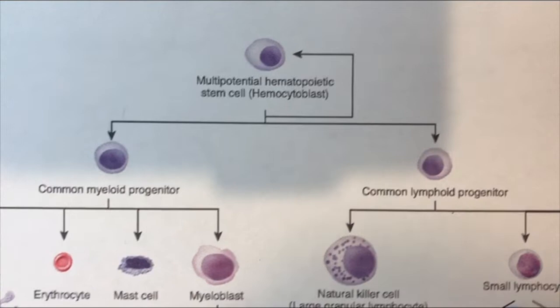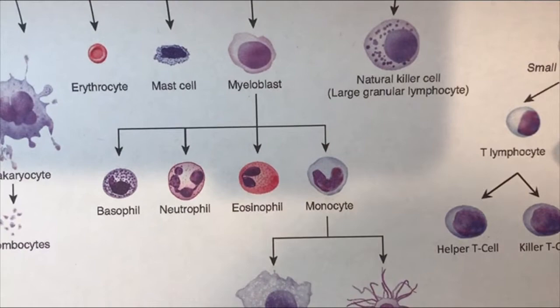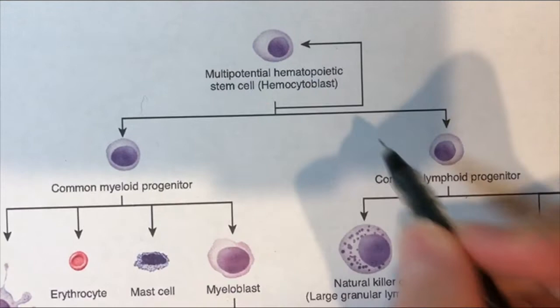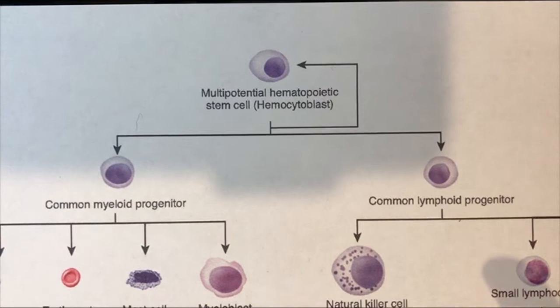Hello everybody and welcome to the Immune System Family Tree Worksheet. If you don't have this worksheet in front of you, I recommend going to Canvas and downloading it so you can print it out. That would be a really good idea so that you can take notes on your worksheet directly as we go through this video. I also recommend getting a lot of different colors of pens if you have that available.